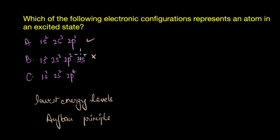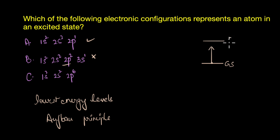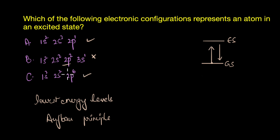Before filling the 3s orbital, all 2p orbitals must be completely filled. In this configuration, one of the 2p electrons has absorbed energy and jumped to the higher-energy 3s orbital — this is an excited state, which is very temporary. The third configuration, 1s2 2s2 2p6, does follow the Aufbau principle and represents a ground state. So option A and C are ground states, and option B is the excited state.